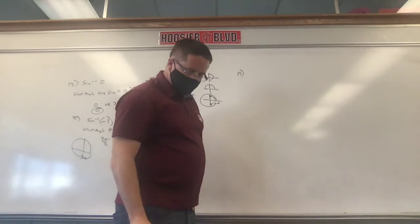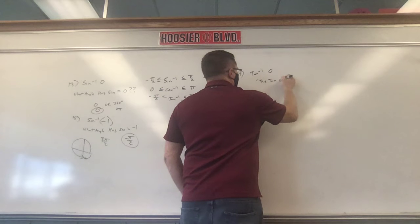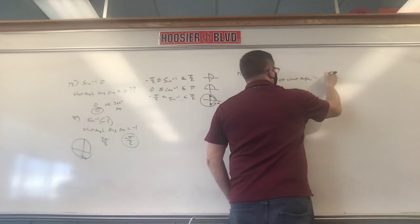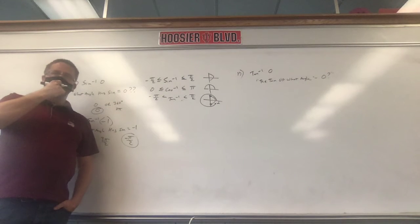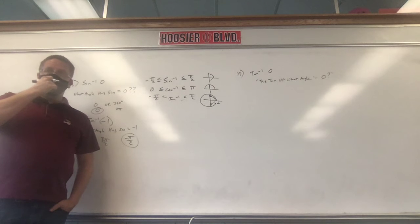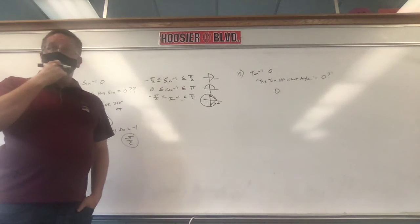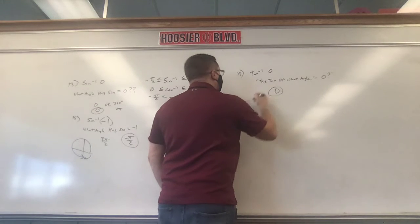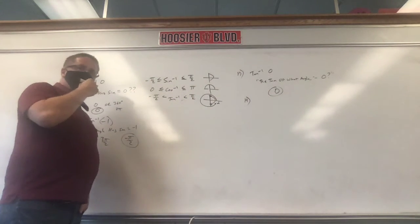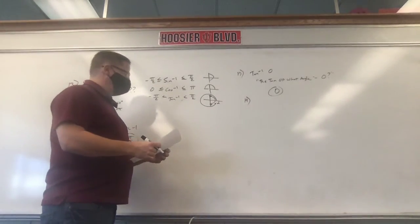Number 17: inverse tangent of 0. The tangent of what angle equals 0? Tangent is zero at 0 degrees and 180 degrees. We only keep zero — 180 is on the left side. Zero radians is acceptable because it's between negative pi over 2 and positive pi over 2.